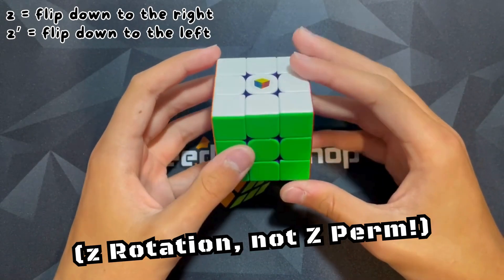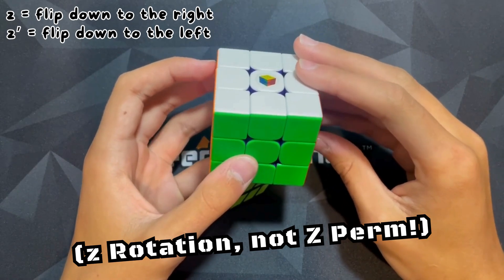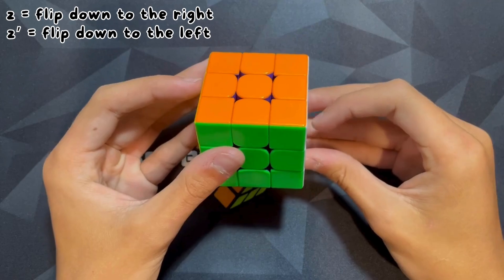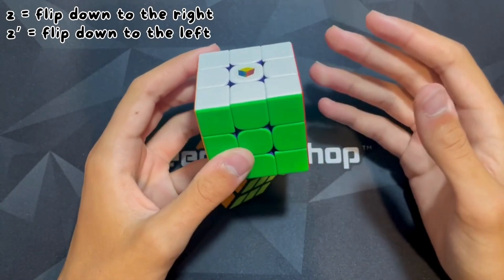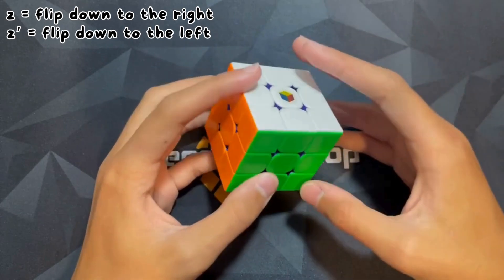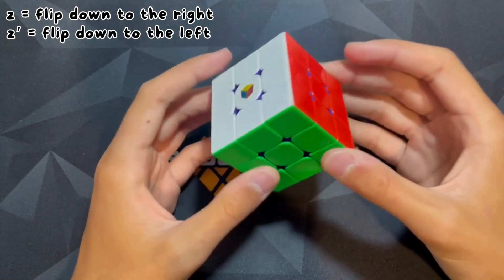So for Z, you see lowercase Z, just turn it like that. If you see a Z and then dash next to it, that's Z prime. You turn the entire cube like that.